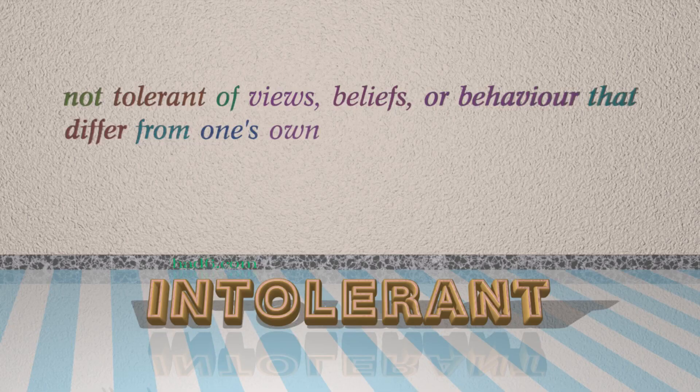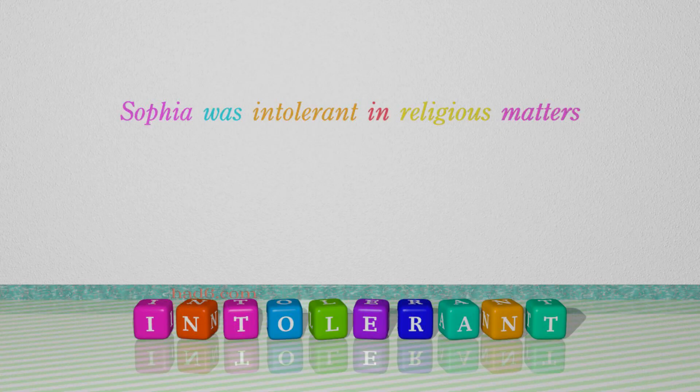Number 7: Intolerant — which means not tolerant of views, beliefs, or behaviour that differ from one's own. For example: Sophia was intolerant in religious matters.